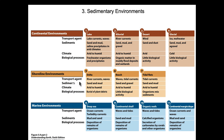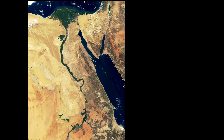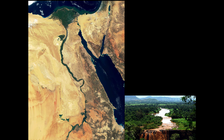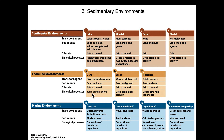In shoreline environments, transport agents are river currents and waves in delta settings, with sand and mud as the sediment. Climate can be arid to humid because material is supplied from elsewhere — the Nile is sourced in the humid Ethiopian highlands but travels through the Egyptian desert where the delta ultimately forms. The burial of plant debris can be a significant component of these sediments.